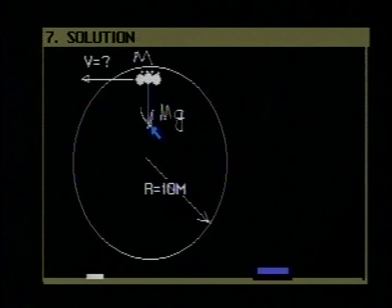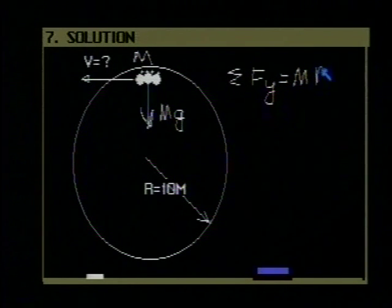This force, the weight, provides the centripetal force to move the roller coaster in the circular path at that point. If we apply Newton's second law, the sum of the forces in the y direction here is equal to the mass times the acceleration in the y direction.